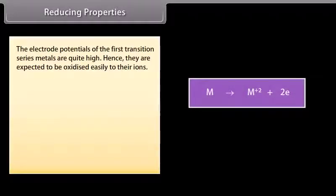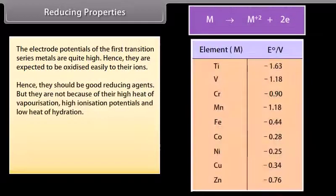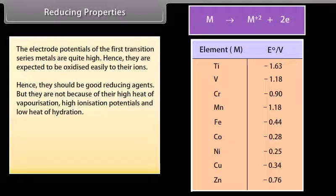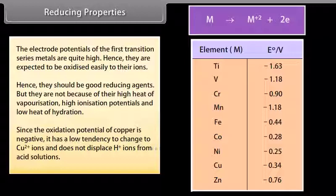The electrode potential of the first transition series metals is quite high; hence they are expected to be oxidized easily to their ions and should be good reducing agents. But they are not, because of their high heat of vaporization, high ionization potentials, and low heat of hydration. Since the oxidation potential of copper is negative, it has a low tendency to change to Cu²⁺ ions and does not displace H⁺ ions from acid solutions.